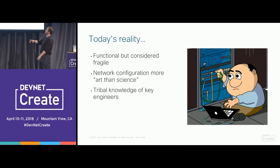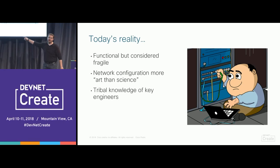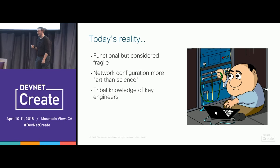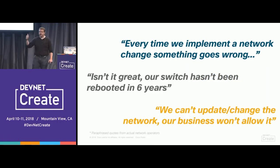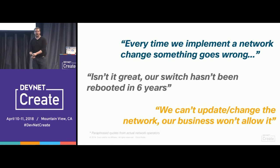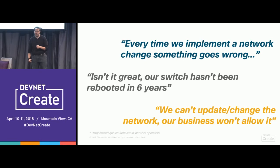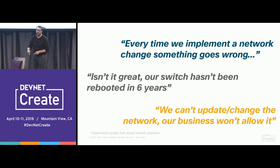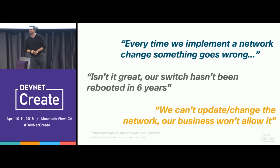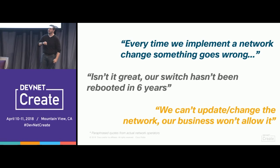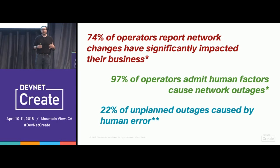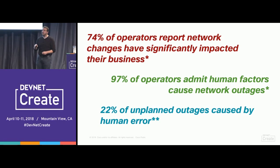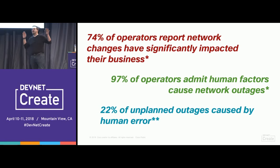Many of us love the image of the network engineer hunkered down in a data center with a console cable, but that's not the world of the future. We can't be doing hand-to-hand combat one switch at a time — we're not going to scale that way. These quotes sound familiar: 'Every time we implement a network change something goes wrong,' 'Our switch hasn't been rebooted in six years,' or 'We cannot update our network, the business won't allow it, the network is too critical.' These are things I've actually heard from network engineers.